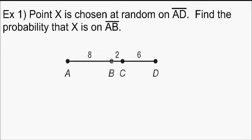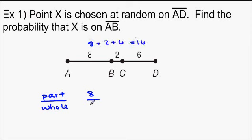So let's start off. Remember it's going to be part divided by whole, so AB is 8. And the whole thing is going to be 8 plus 2 plus 6, which is 16. So 8 over 16, and we can simplify that to 1 half. So the probability that X is on AB is 1 over 2.